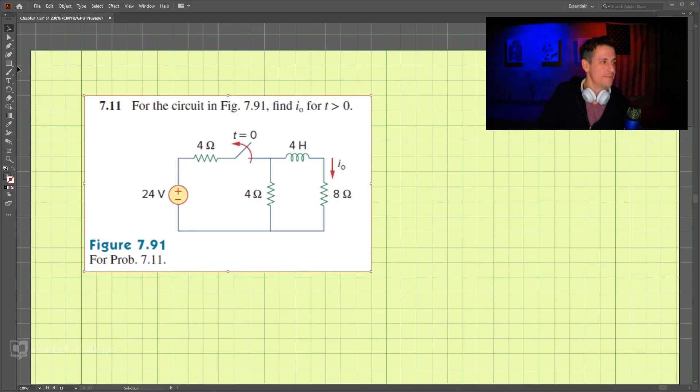So this is 7-11, and we have this circuit that's originally connected here, and we want to find I-naught for t is greater than zero.